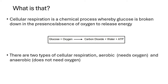Cellular respiration is the process whereby the glucose in the food is broken down in the presence or in the absence of oxygen so that energy can be released. The body needs energy, and the process of cellular respiration produces that energy.